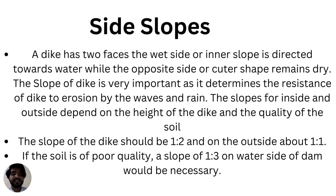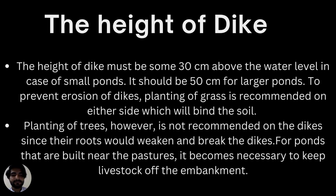The slopes on the inside and outside depend on the height of the dike and the quality of the soil. If the soil quality is good, you will not need very large side slopes. The slope of the dike should be 1:2 on the inside and about 1:1 on the outside for good quality soil. If the soil quality is poor, a slope of 1:3 is recommended — either 3 from the outside or 1 from the inside — to adequately support the dike.